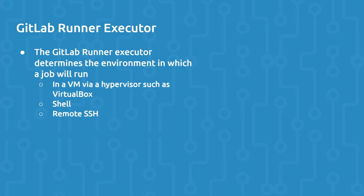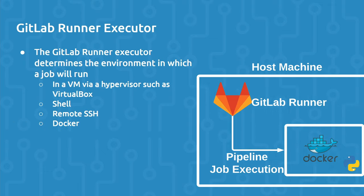With the SSH executor, the GitLab Runner program will connect to a remote machine and send the job instructions to that remote machine, and the remote machine will execute those pipeline job instructions. This executor is not commonly used — in GitLab's documentation, they actually encourage you to use other executors instead of the remote SSH executor. Docker is another executor option, and the Docker executor option is commonly used.